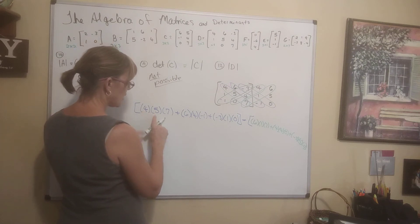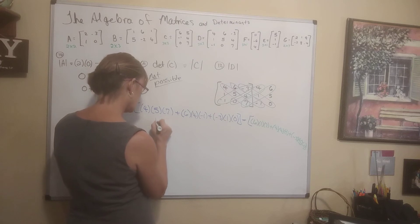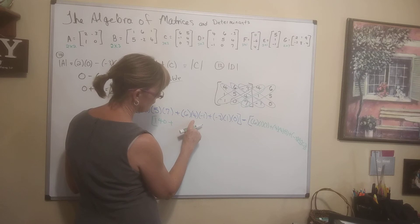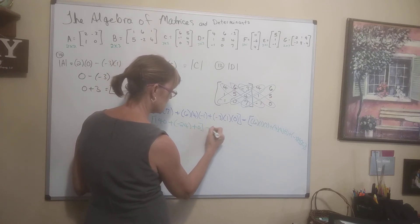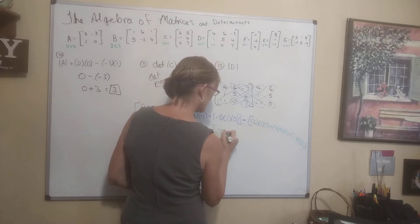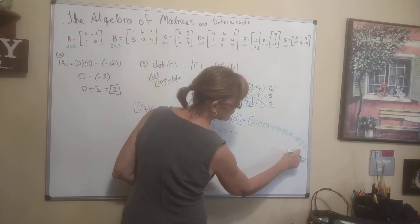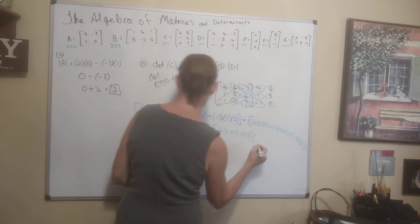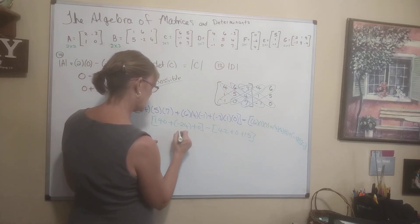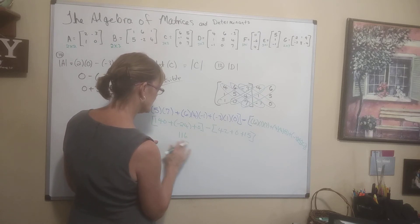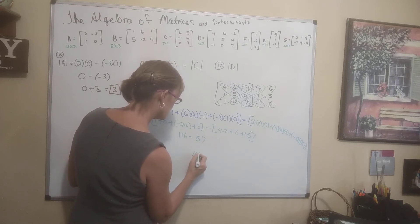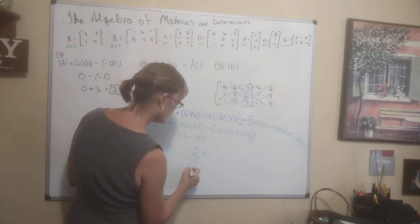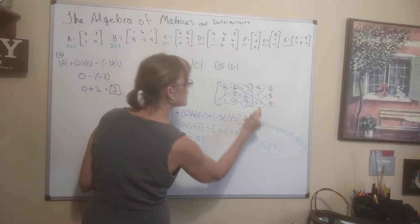Computing: 4×5 = 20, times 7 = 140. Plus 6×4×(−1) = −24. Plus (−3)×1×0 = 0. That gives 116. Subtract: 6×1×7 = 42, plus 0, plus (−3)×5×(−1) = 15. That's 57. So 116 minus 57 = 59. The determinant of this 3 by 3 matrix is 59.